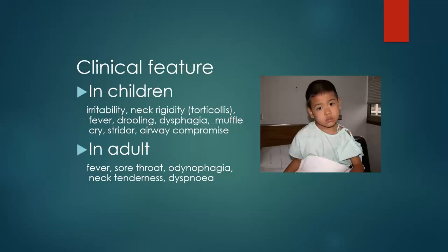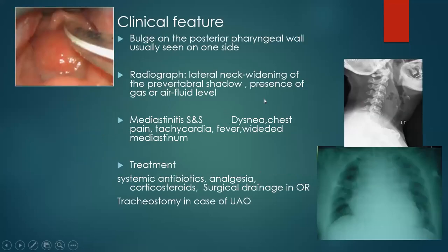Children with retropharyngeal abscesses usually present with irritability, neck rigidity and torticollis, fever, drooling and dysphagia, muffled voice because the abscess obstructs the airway, and stridor and dyspnoea from airway compromise. In adults, they usually present with fever, sore throat, odynophagia, neck stiffness, and dyspnoea.